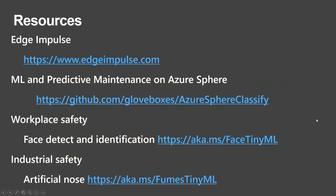Just one more slide on resources. Check out Edge Impulse — they have a free developer offering as well as an enterprise offering at edgeimpulse.com. All the source code and a wiki for this Azure Sphere classification for predictive maintenance is on my GitHub. There are also a couple of other interesting scenarios: a workplace safety scenario using Face Detect on the device with the Face API in Azure cognitive services to identify people, and an 'artificial nose' demo using a gas sensor to detect hazardous fumes in a workplace environment — a neat solution that can be easily ported to Azure Sphere.